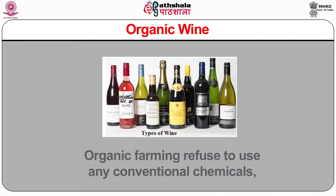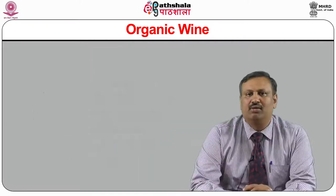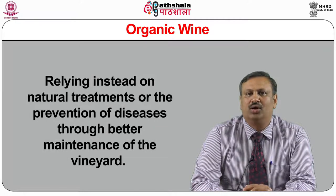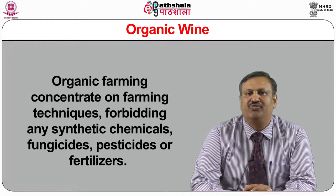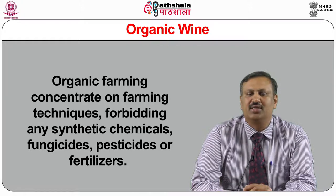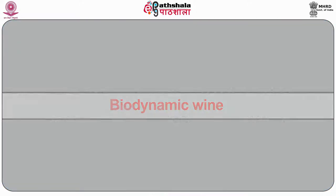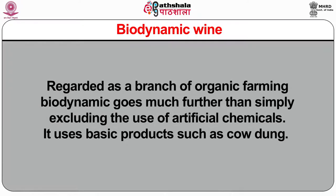Organic wines are produced by organic farming methods. Organic farming refuses to use any conventional chemicals, relying instead on natural treatments or the prevention of diseases through better maintenance of the vineyard. Organic farming forbids any synthetic chemicals, fungicides, pesticides or fertilizers, concentrating on soil fertility by maintaining biological activity within it. Biodynamic wine is regarded as a branch of organic farming — it goes much further than simply excluding the use of artificial chemicals, and uses basic products such as cow dung.